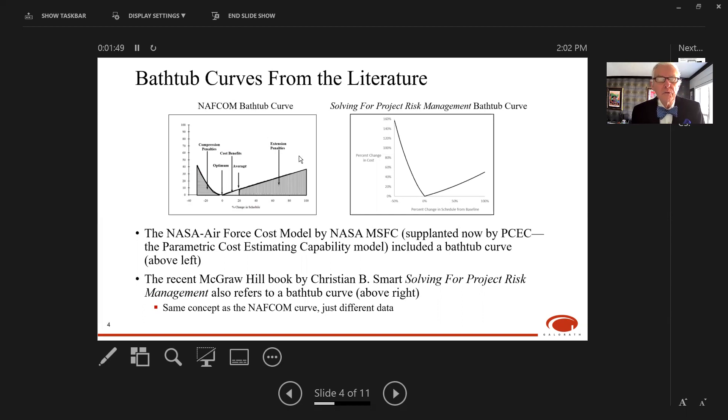The first bathtub curve is on the left from the NAFCOM model, a NASA Air Force cost model that's been replaced by PCEC—the Parametric Cost Estimating Capability model developed by NASA Marshall. The old NAFCOM model had this bathtub curve. There's a recent book by Christian Smart, Gallarath's Chief Scientist, called Solving for Project Risk Management, which also refers to a bathtub curve shown in the right chart. Same concept, just different data.